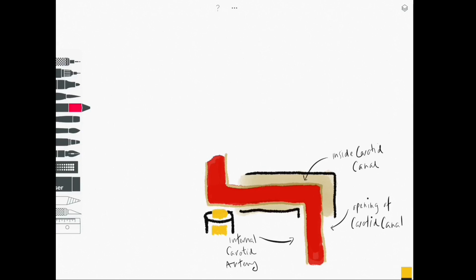Foramen lacerum is a strange foramen in the sense that its inferior opening actually has a cartilage plug sitting in there. So nothing really passes through that foramen but simply the internal carotid artery changes direction to ascend at the level of the base of the skull.